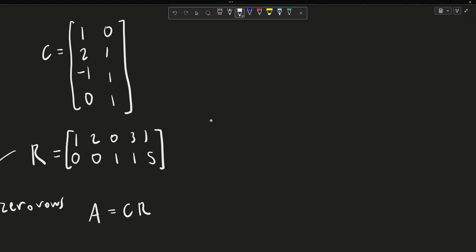So if we take C, multiply by R, we obtain this. Our final matrix should be of dimension 4 by 5.